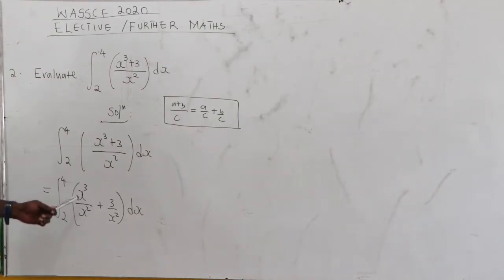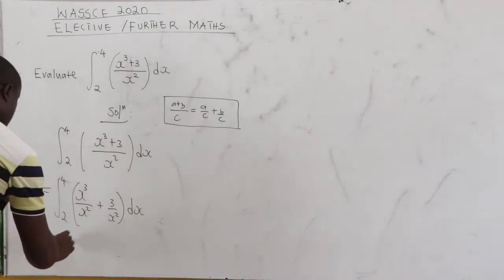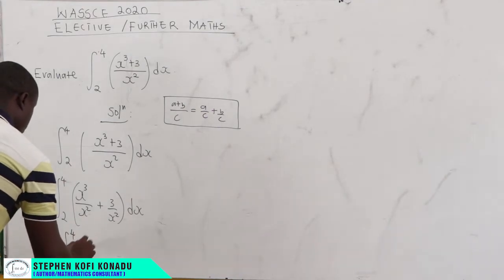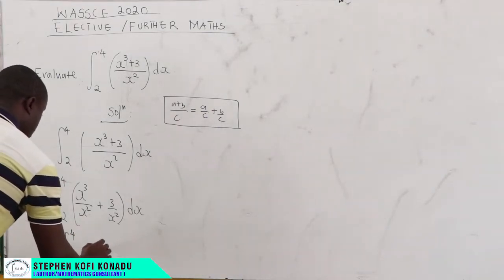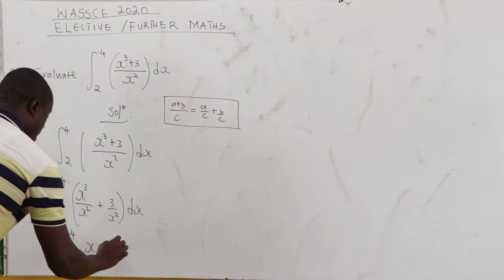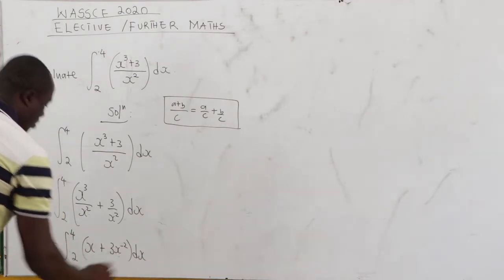Now from here, when you are dividing and the bases are the same, we subtract the exponent. So from here, this is the same as integral from 2 to 4, and this is going to be x plus 3x negative 2 dx.